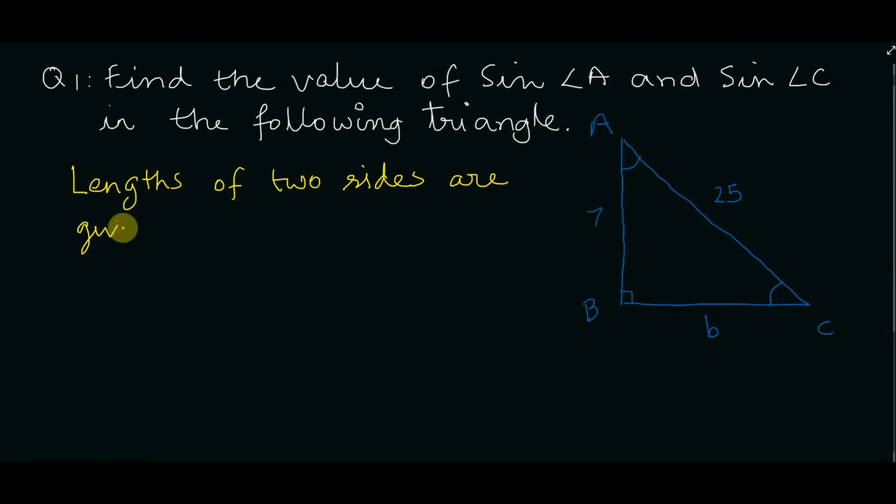In this triangle, the length of two sides are given. A is equal to 7, C is equal to 25, and B is unknown.